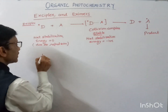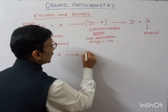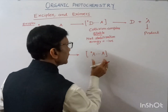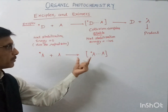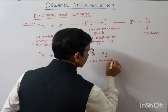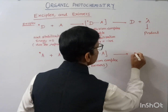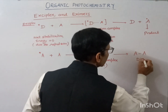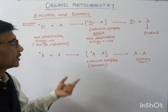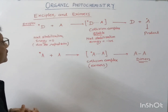Now suppose we have an excited acceptor molecule that interacts with another acceptor molecule in the ground state. Here also a collision complex is formed between the same type of molecules, and this collision complex is called an excimer. During excimer formation, a monomer is formed or another type of rearranged product can be formed when we get an excimer or exciplex.